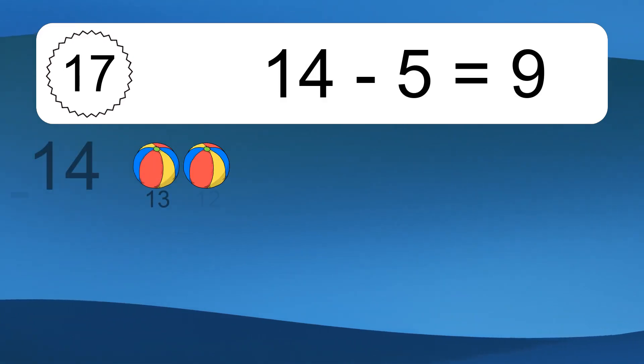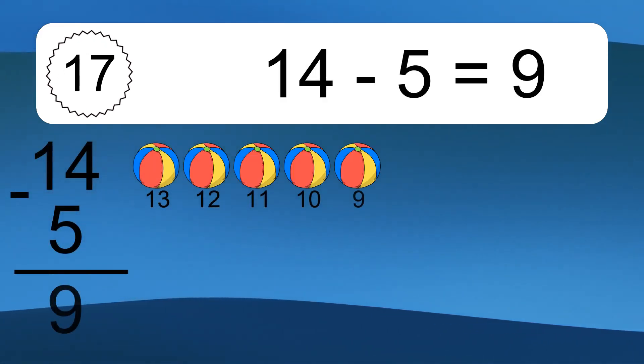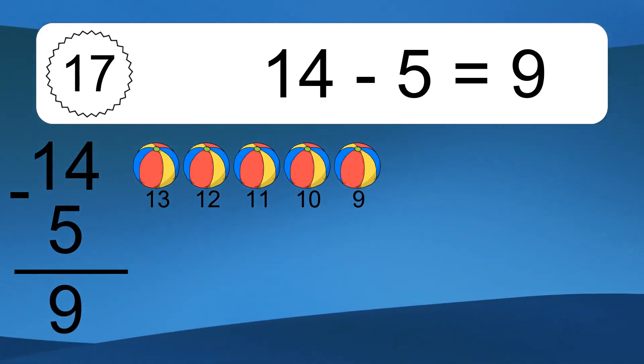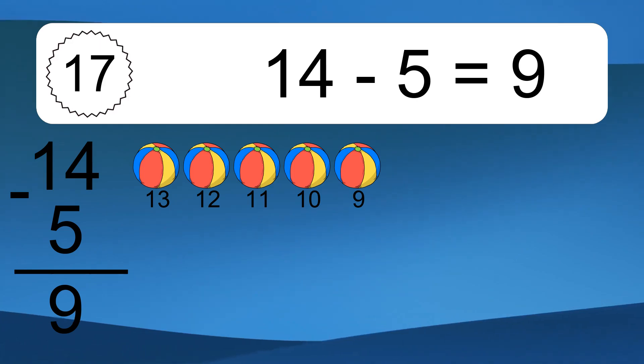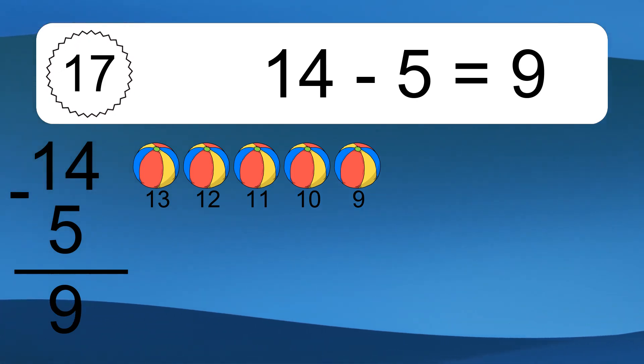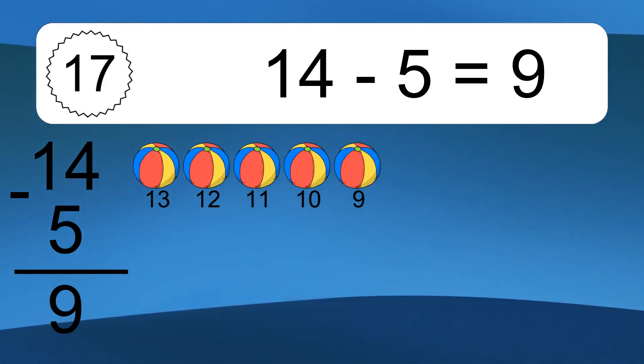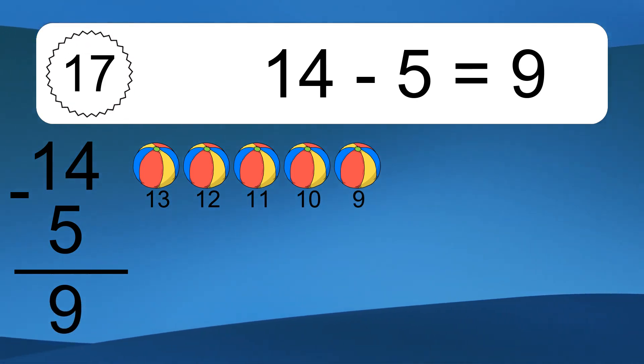14 minus 5 equals what? 14 minus 5 equals 9. Let's count it: 13, 12, 11, 10, 9.